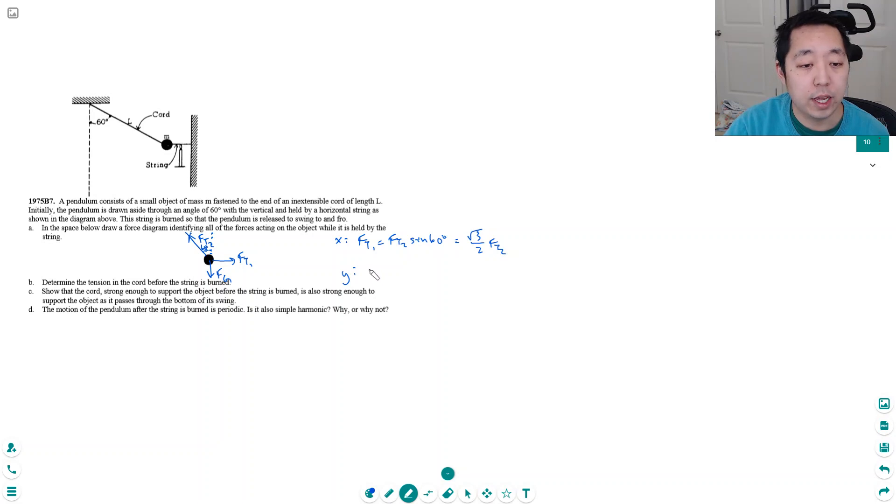In the y direction, I have force of gravity which is equal to mg, and that has to equal the y component of the tension FT2, which would be FT2 cosine 60 degrees, and that's one half FT2. I can solve for FT2.